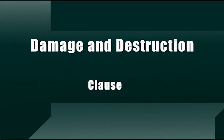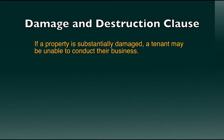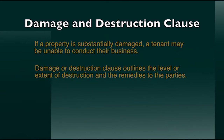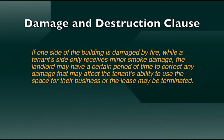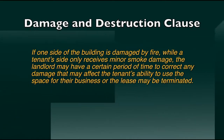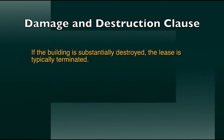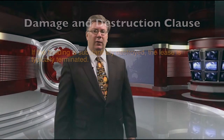A damage and destruction clause addresses what happens if a property is substantially damaged and a tenant is unable to conduct business. It outlines the level of destruction and the remedies to the parties. For example, if one side of the building is damaged by fire and the tenant's side receives only minor smoke damage, the landlord may have a certain period to correct damage — or the lease may be terminated. Rent may be abated during reconstruction. If the building is substantially destroyed, the lease is typically terminated. If damage results from the tenant's own actions, they have no right to cancel the lease; if from vandalism or an act of God, the landlord has a reasonable period to make repairs before the tenant can terminate.